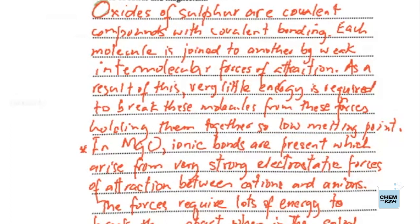For magnesium oxide, this is an ionic compound. Ionic bonds are present, and these arise from very strong electrostatic forces of attraction between the cations and the anions. These forces require lots of energy to break them apart when in the solid state. So magnesium oxide has a melting point of 2,852 degrees Celsius, or you could say a high melting point. That should give us our six marks.